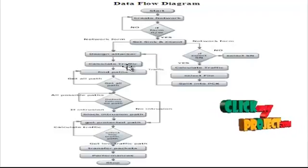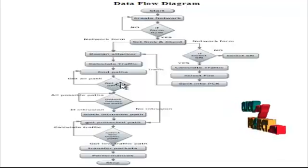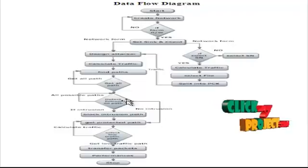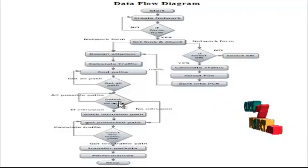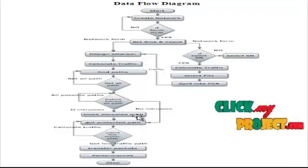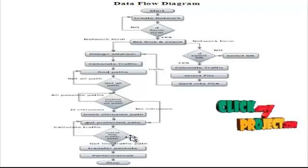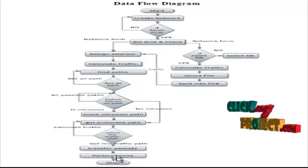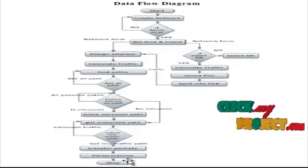If the traffic is higher, optimize the traffic path: calculate the traffic, find all possible paths, detect intrusions on each path. Whichever path has higher traffic is identified as having intrusions, and that path is blocked so it cannot be used by other source nodes. The protected low-traffic path is used as the normal path to transfer packets. Performance comparing existing and proposed systems for intrusion reduction is displayed in graphical format.